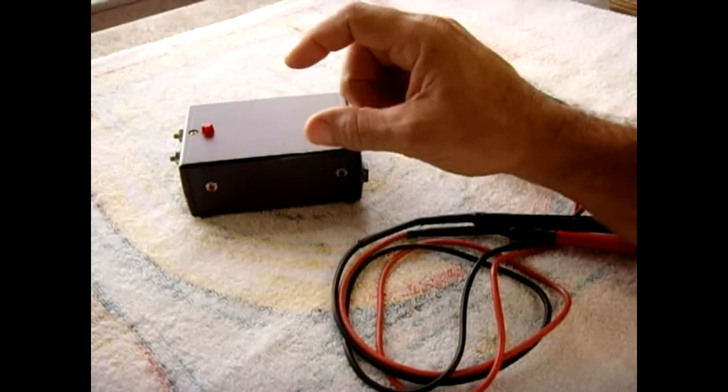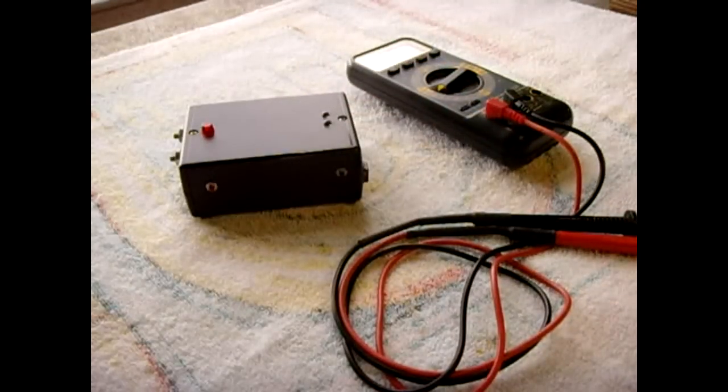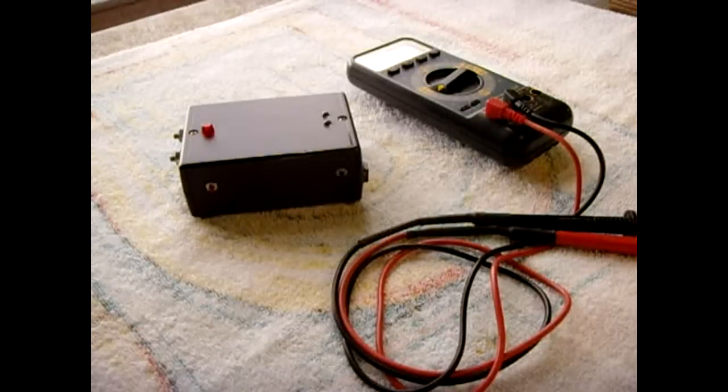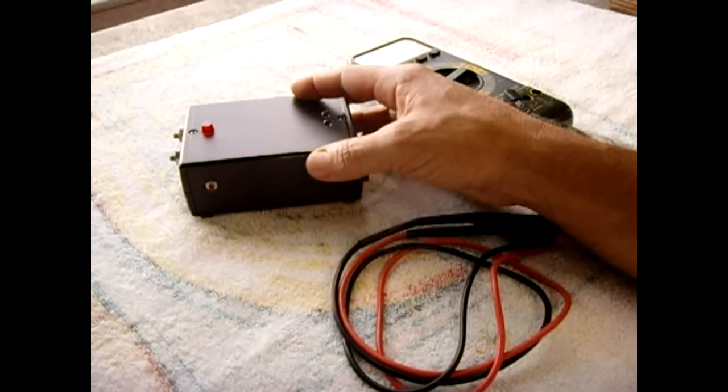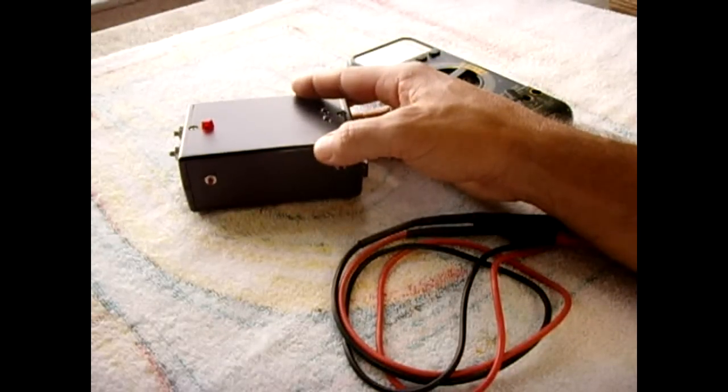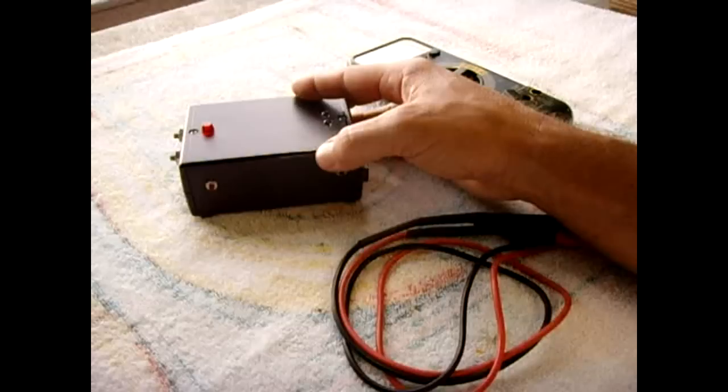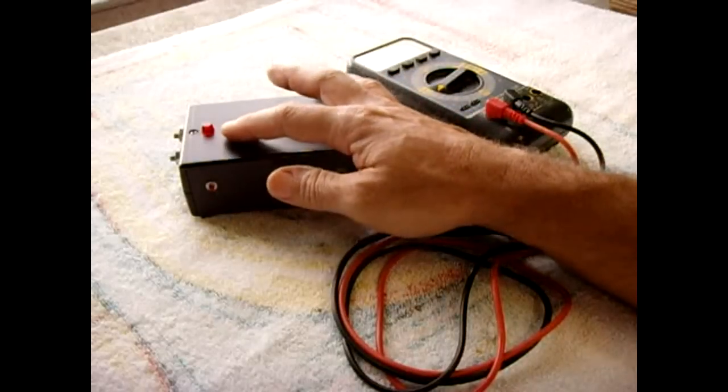It goes into two 250 volt 560 micro farad capacitors. The capacitors I found inside of an old cathode ray television set. Because this circuit charges up to 500 volts, I needed to connect both of those capacitors inside here in series, so I end up with a 500 volt capacitor rated at half the value, so it's 500 volts at 280 micro farad.